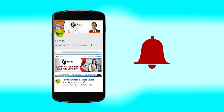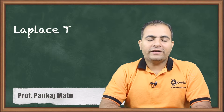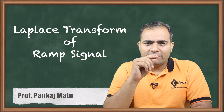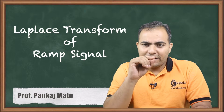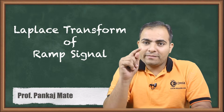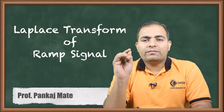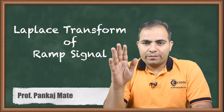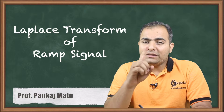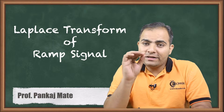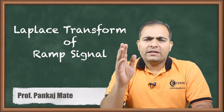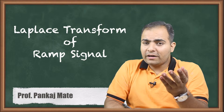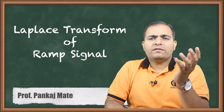Today's topic is the Laplace transform of a ramp signal. A ramp signal is a function which varies linearly with respect to time — it carries some slope. This ramp function totally depends on the value of its slope. If the slope value is 1, the signal is called a unit ramp signal; otherwise it is a ramp signal with a given slope value. We will first draw the graph of the ramp wave and then write its equation.